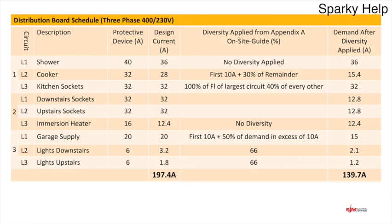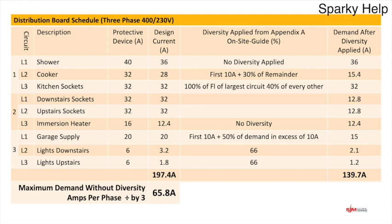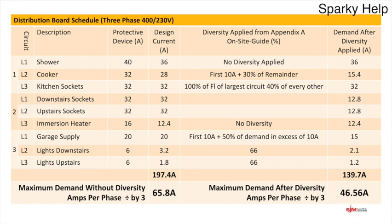Now let's look at a three-phase example with the same circuits spread over three phases. The maximum demand without diversity is still 197.4, and with diversity 139.7 — but this is over three phases, so we divide by three to get amps per phase. Without diversity: 197.4 ÷ 3 = 65.8 amps per phase. With diversity: 139.7 ÷ 3 = 46.56 amps per phase. Adding individual phases up is difficult and won't be accurate due to the way the calculation works, so dividing by three gives the best approximation.